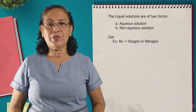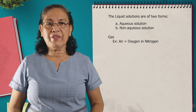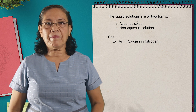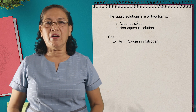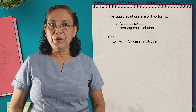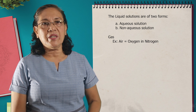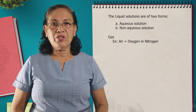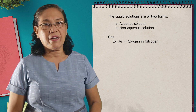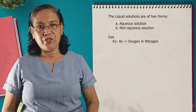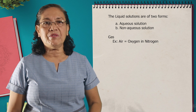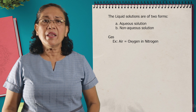Let's go to the gaseous solution. A good example of a gaseous solution is the air. If you consider the air, there is 21% oxygen and 78% nitrogen. If you look at the composition, oxygen is in a lesser amount so it is considered the solute, while the nitrogen is in a greater amount so it is considered the solvent. So the air is an example of a gaseous solution.